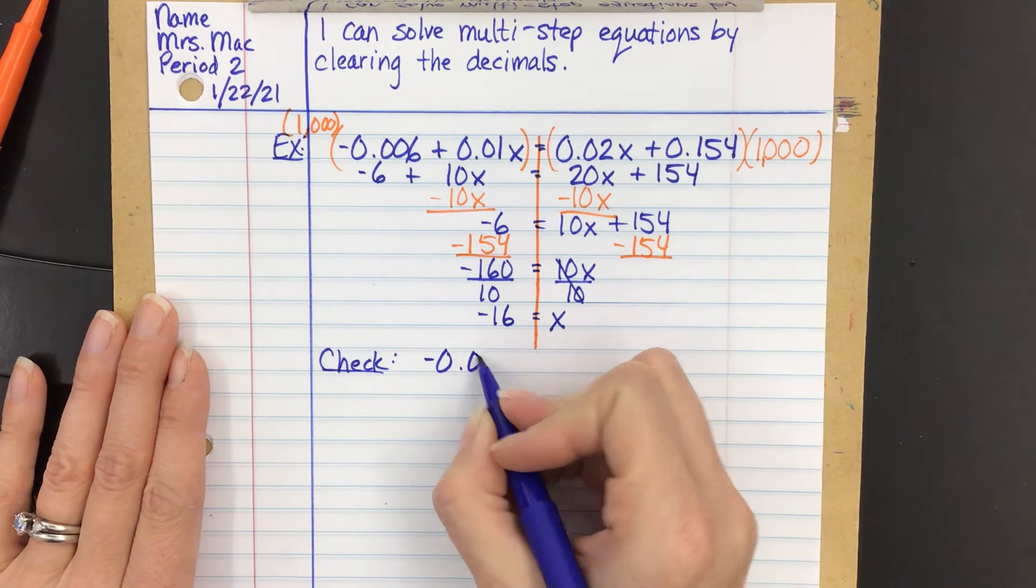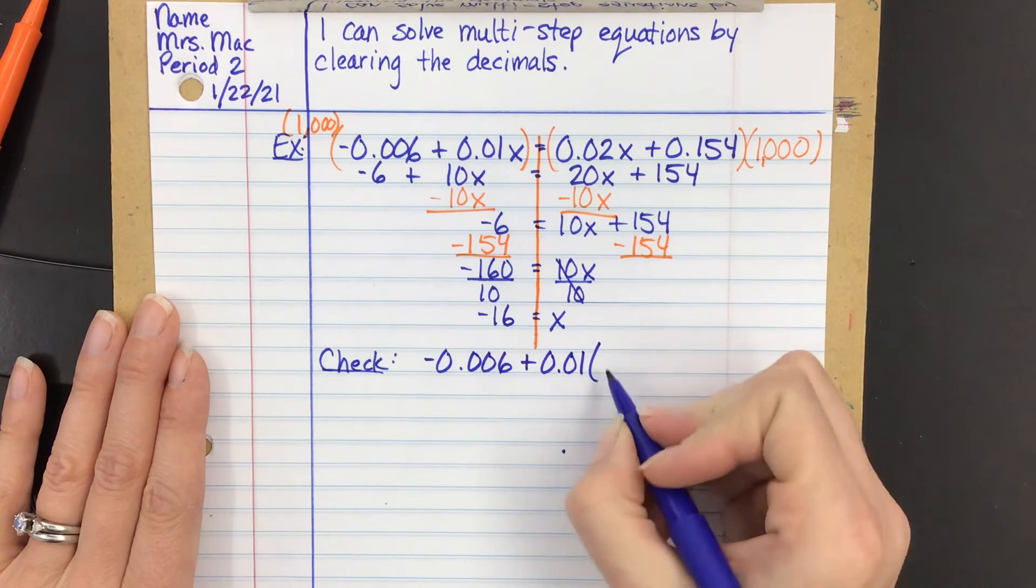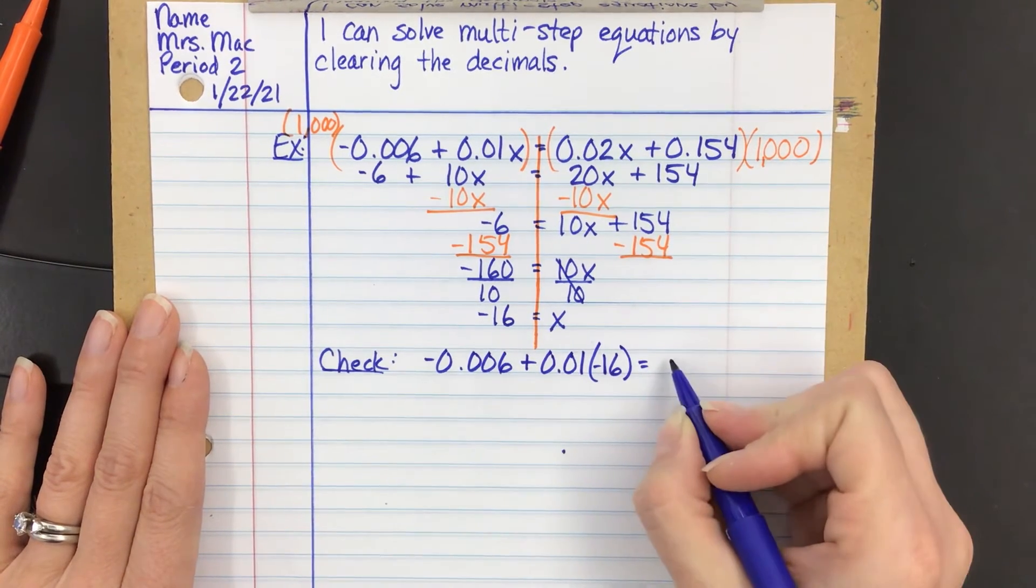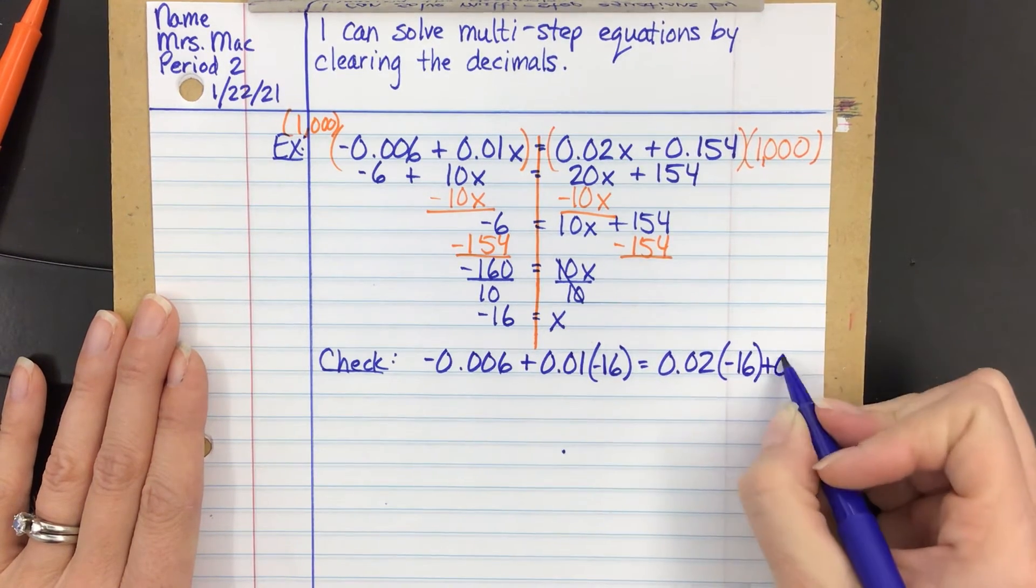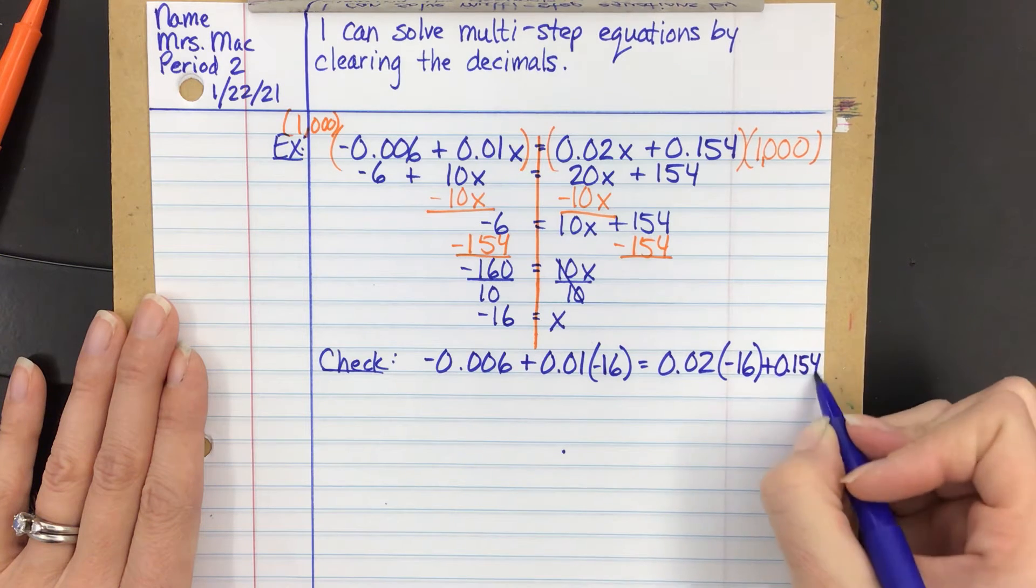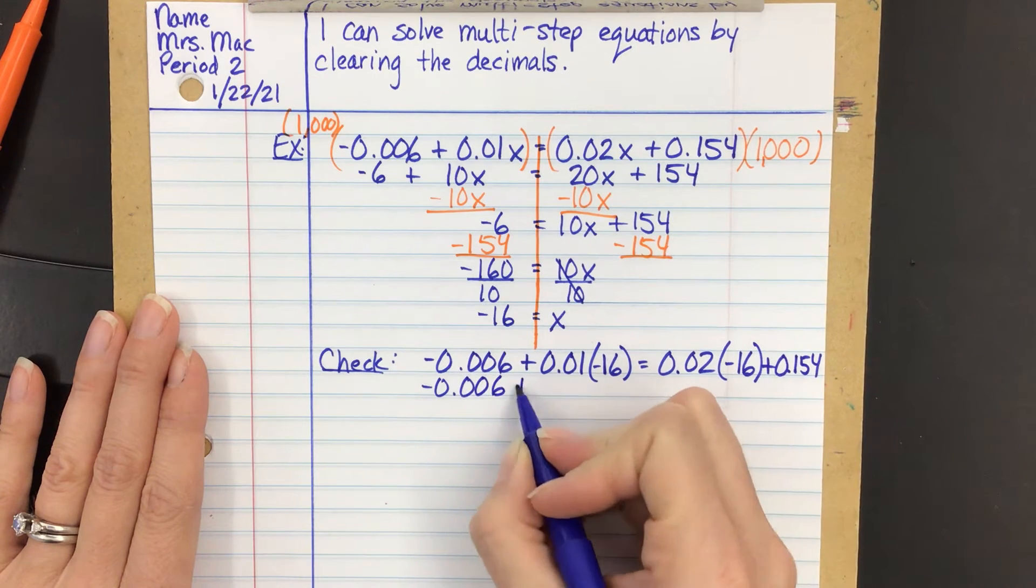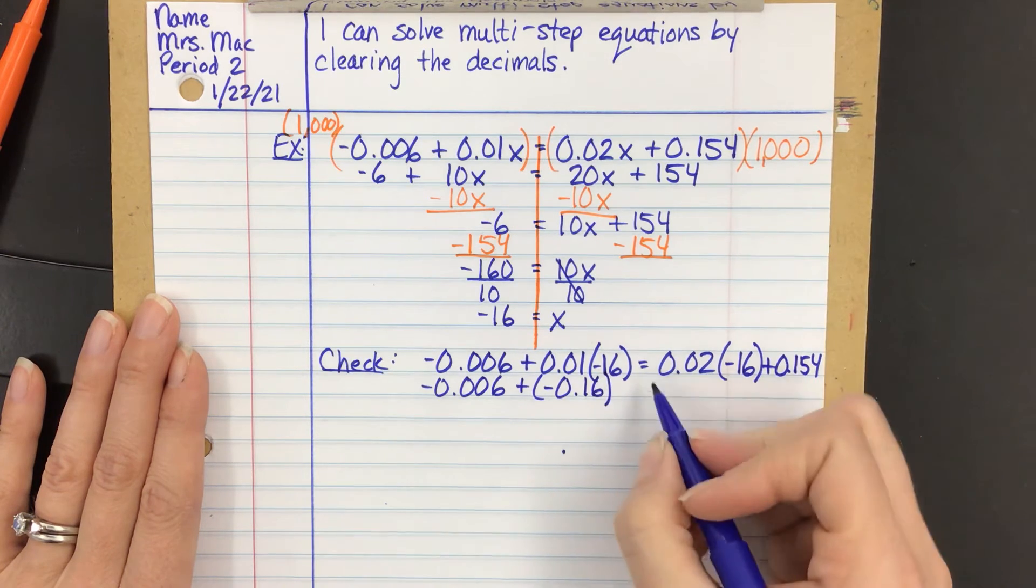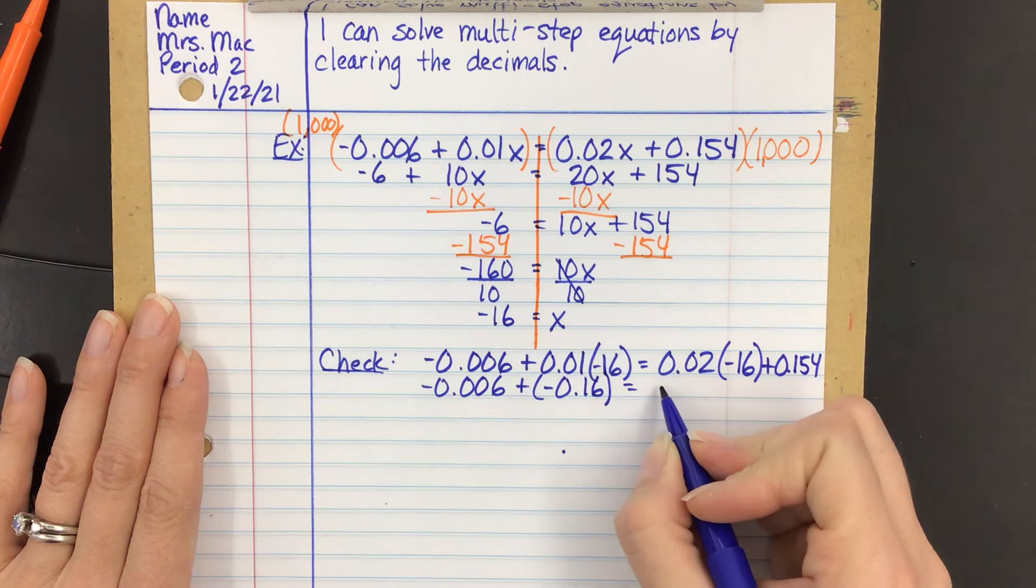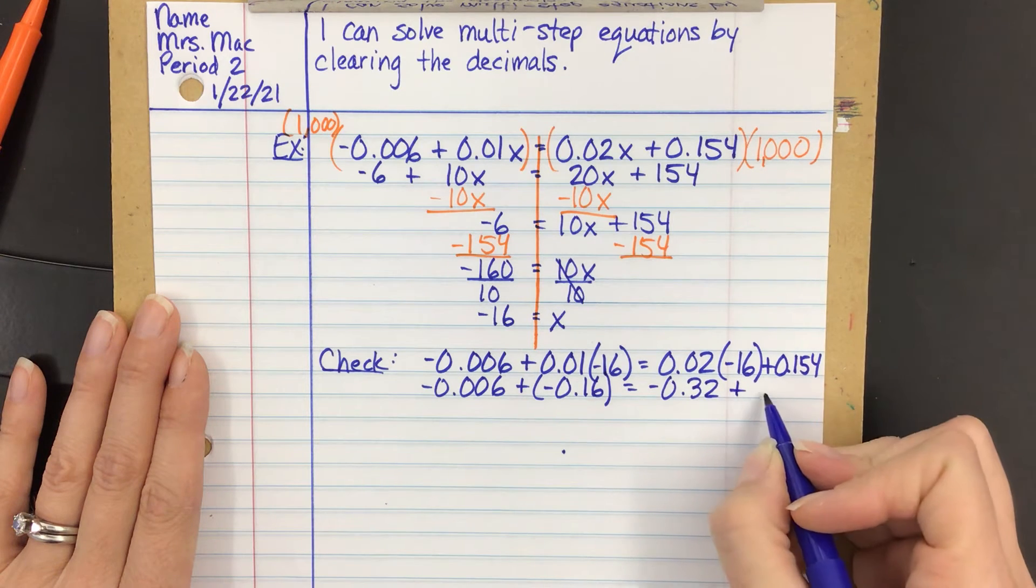So this is going to be negative 0.006. And I'm going to multiply by negative 16 here. And I made a mistake on this when I was showing the last class. So I'm going to try not to make a mistake this time. Okay. So I'm going to multiply these out. So this is going to be negative 0.16. And this is going to be negative 0.32. Okay.